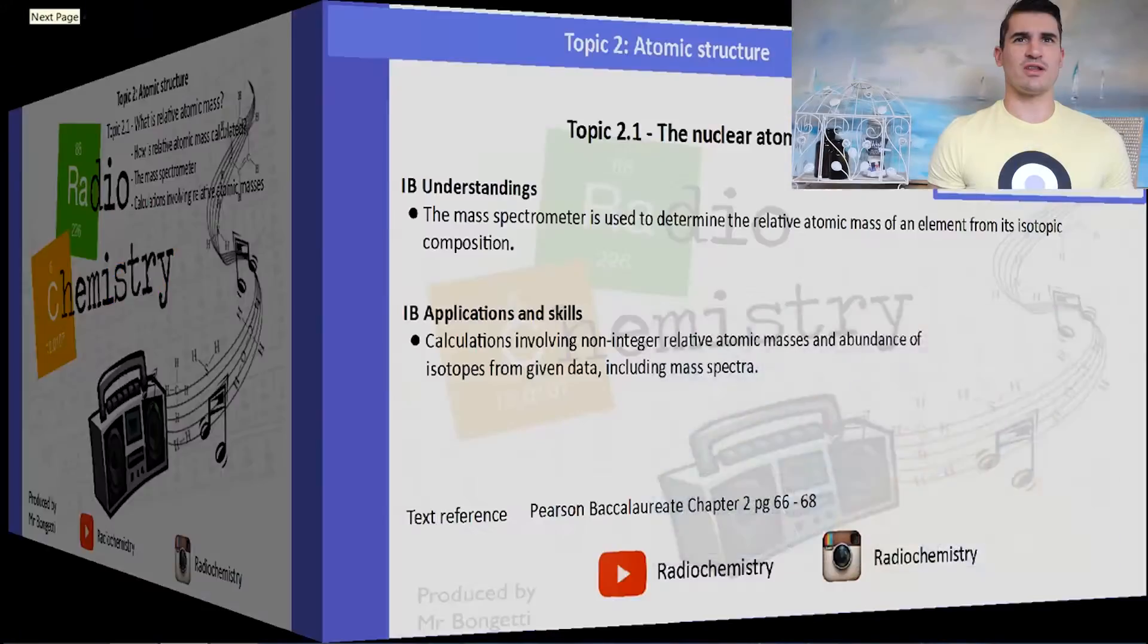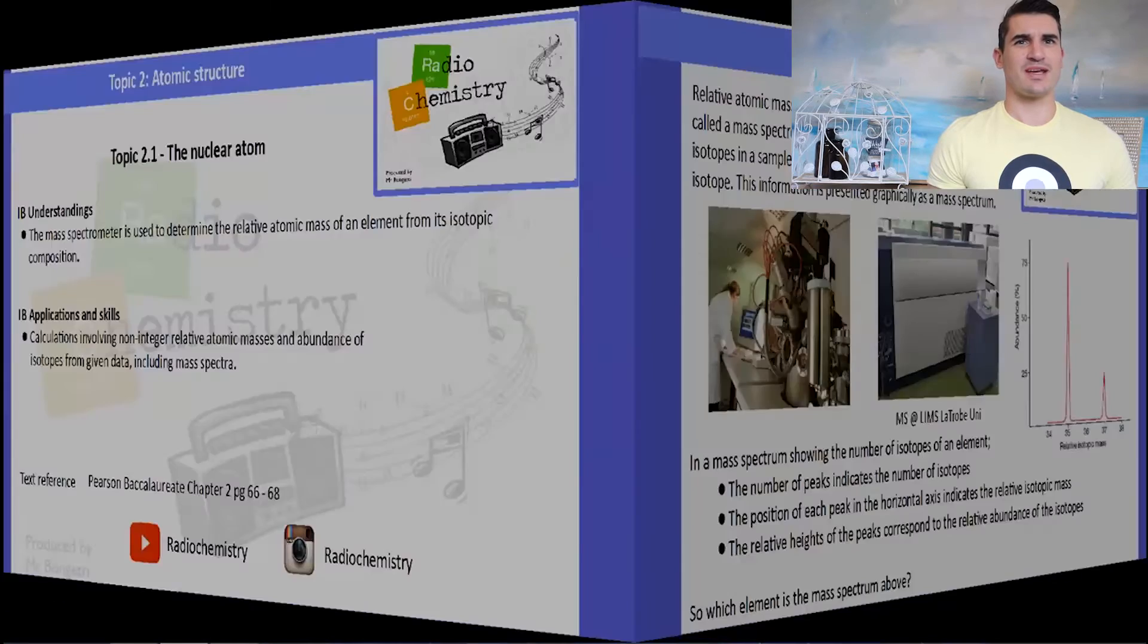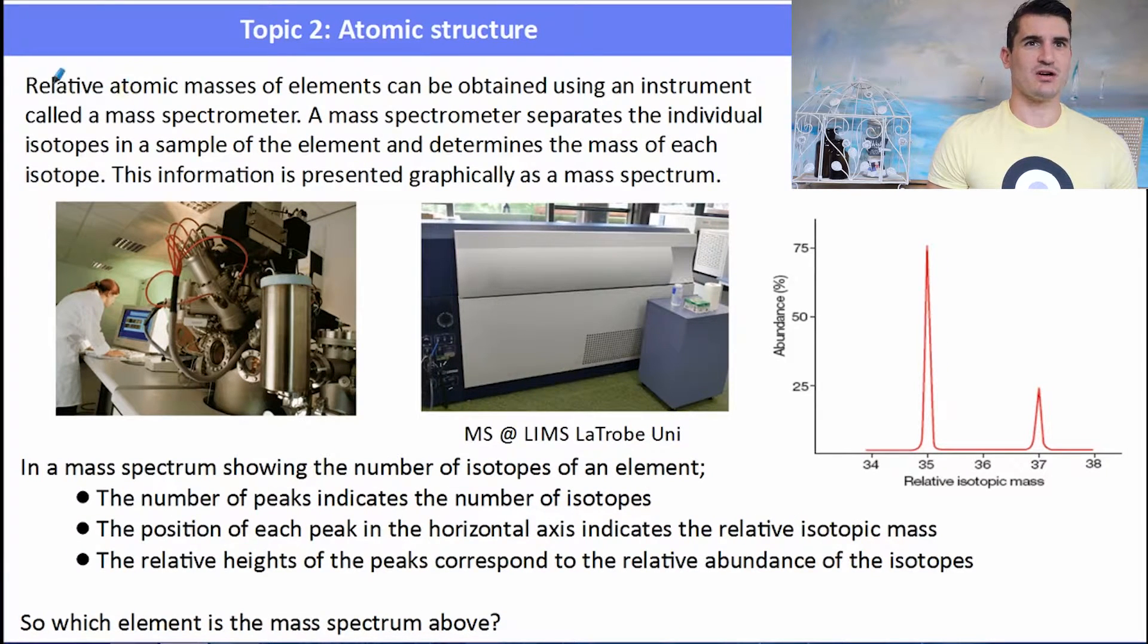Okay topic 2.1, what is relative atomic mass? We look at how the relative atomic mass is calculated, we talk about the mass spectrometer, and we look at some calculations involving relative atomic mass. The IB understandings is you need to know that a mass spec is used to determine the relative atomic mass of isotopes, and then we look at some calculations using mass spectra.